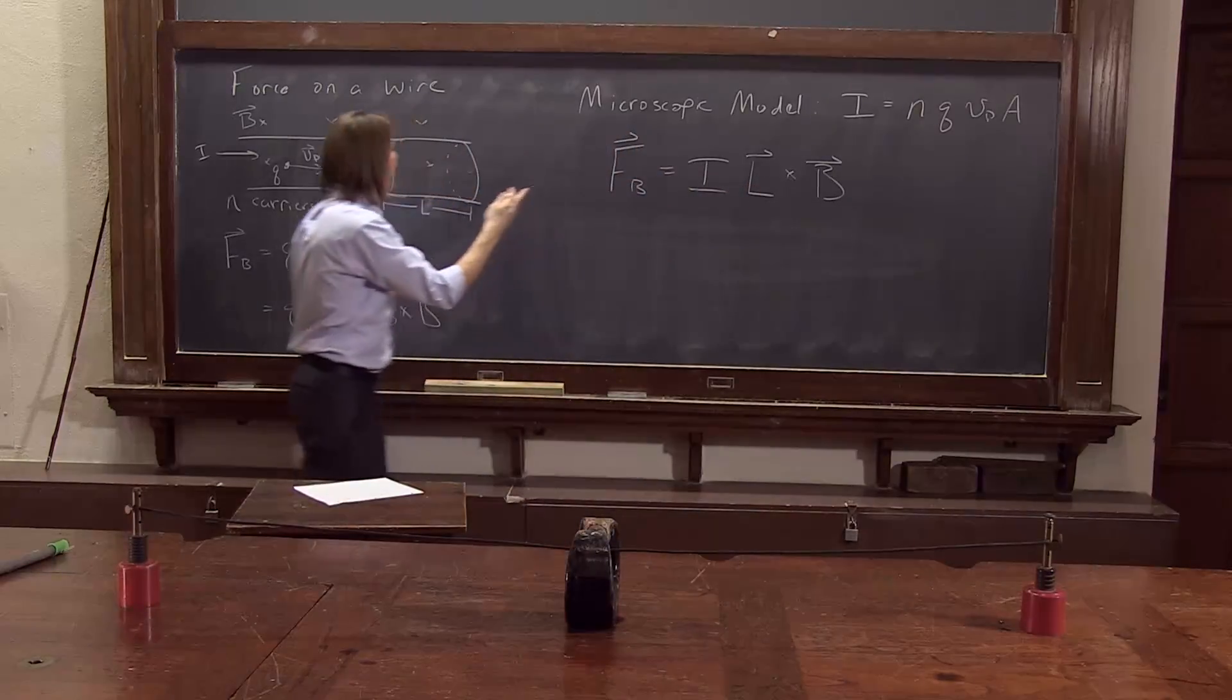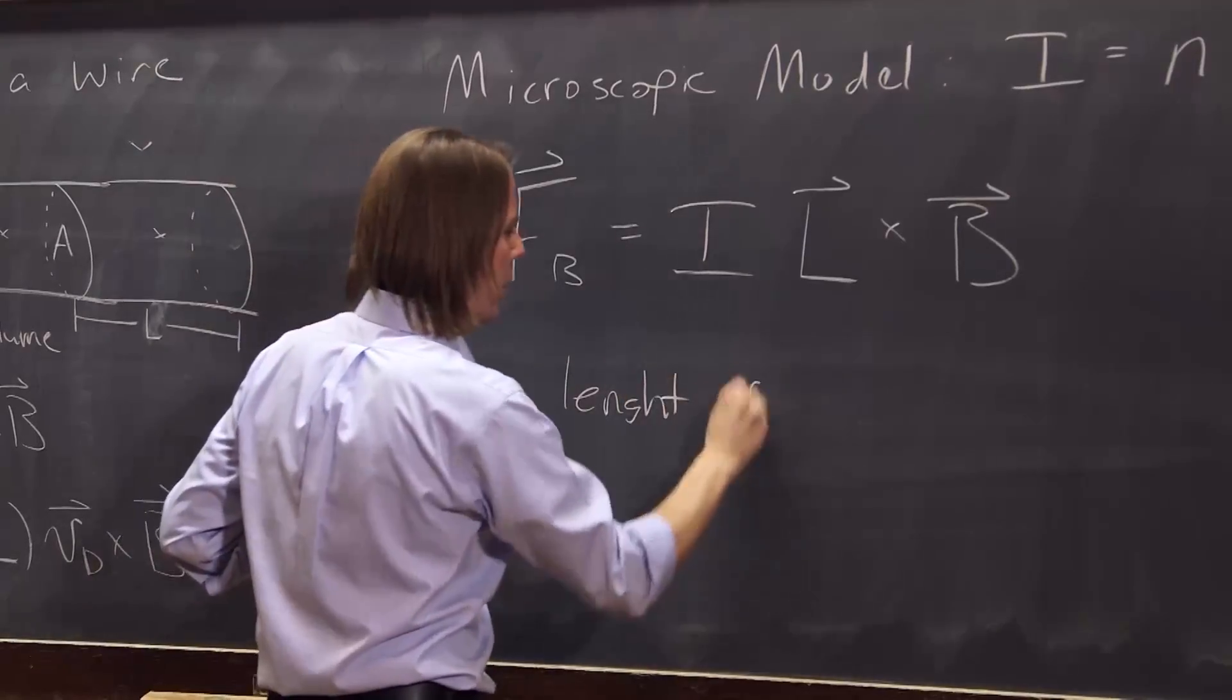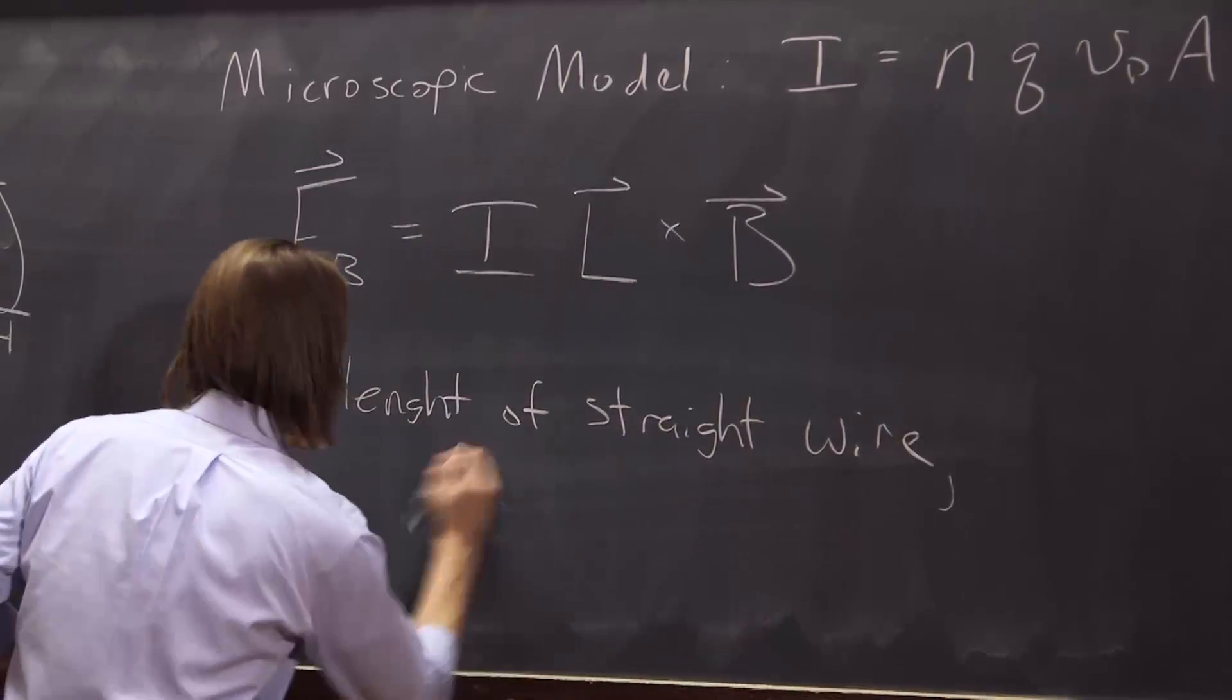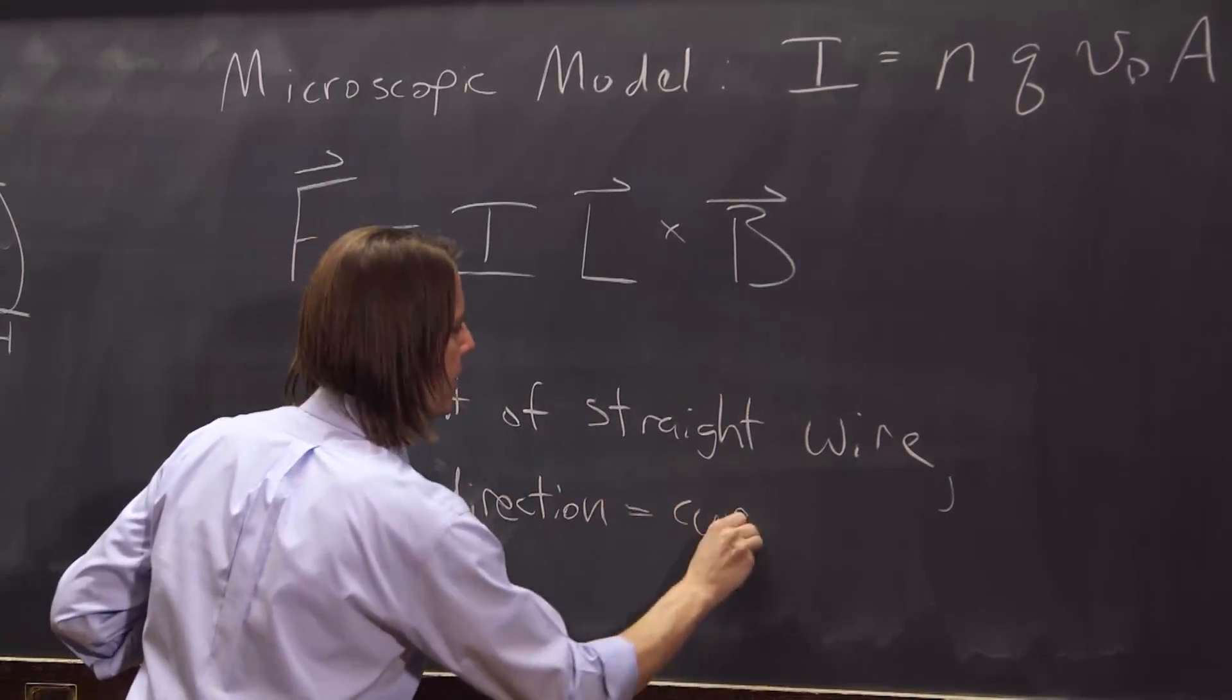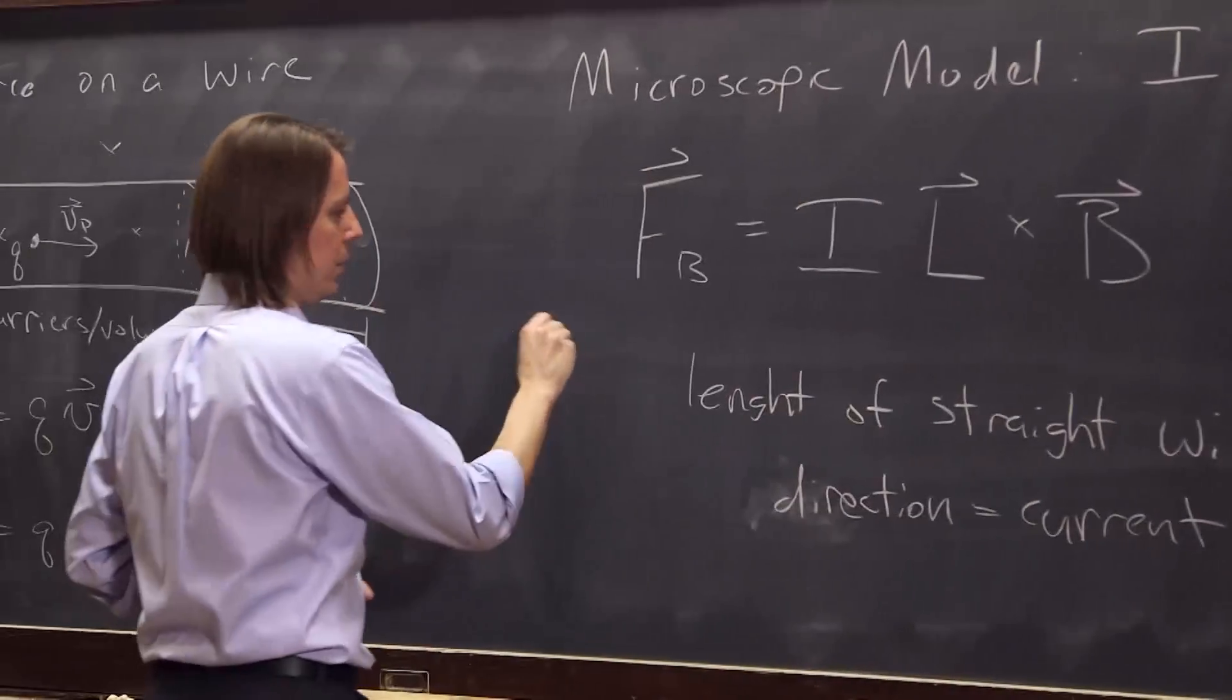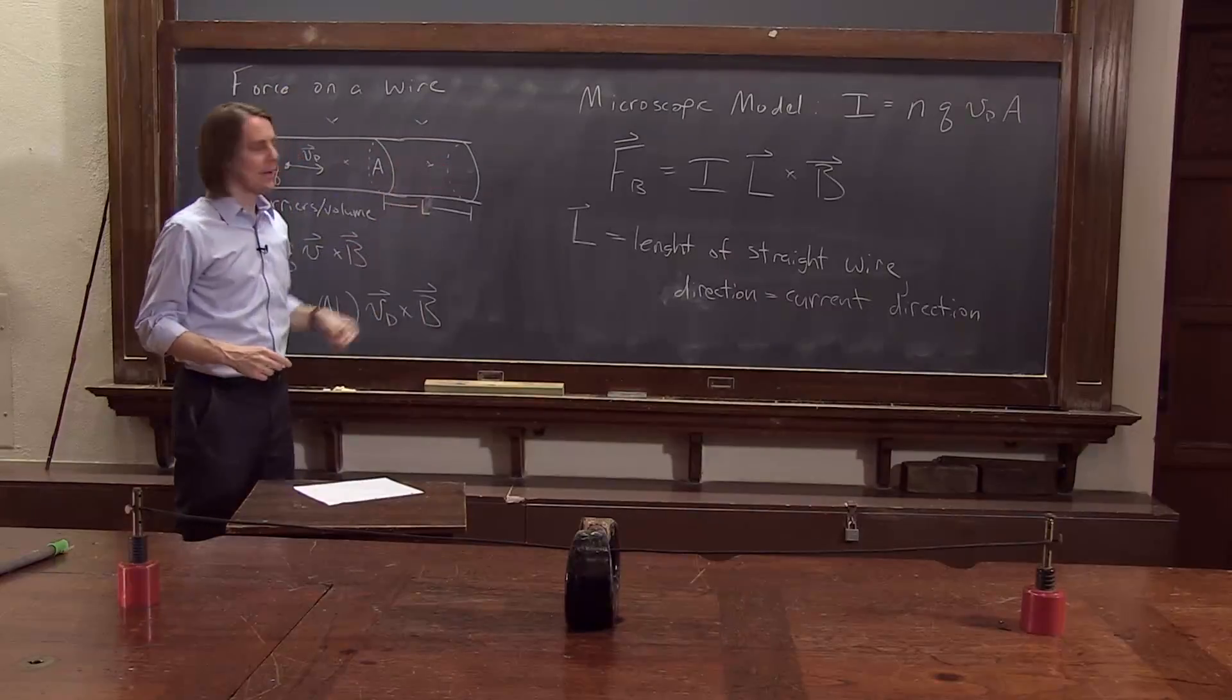But to get a vector, we just have this L. And L is just the size of the piece of wire you're looking at. So this is just the length of the straight wire in the direction equals the current direction. So that's just a vector. Points along the current, has a magnitude equal to the length.